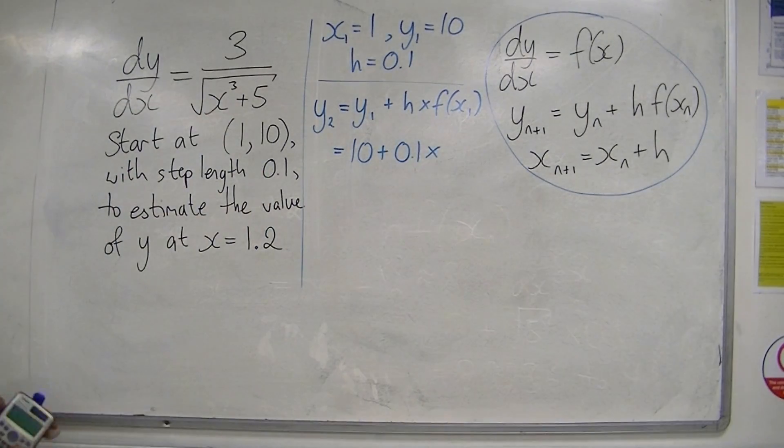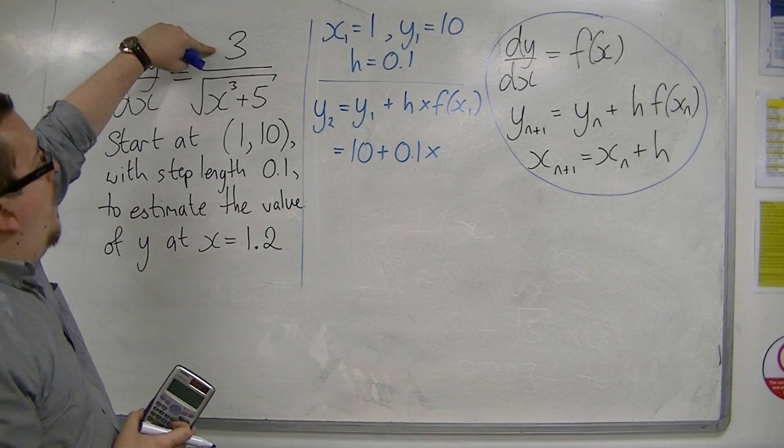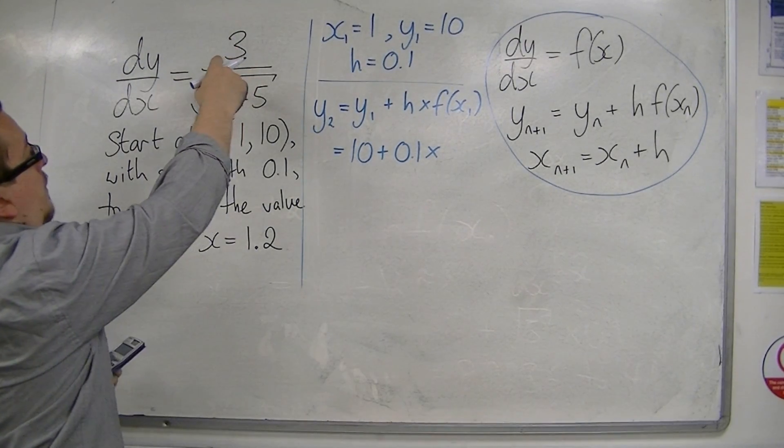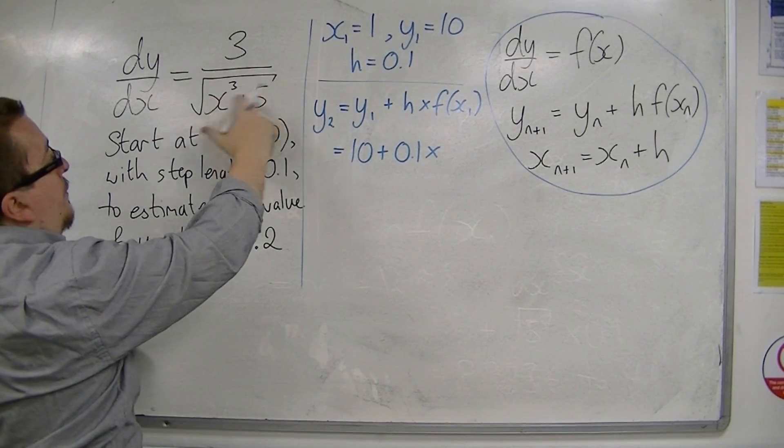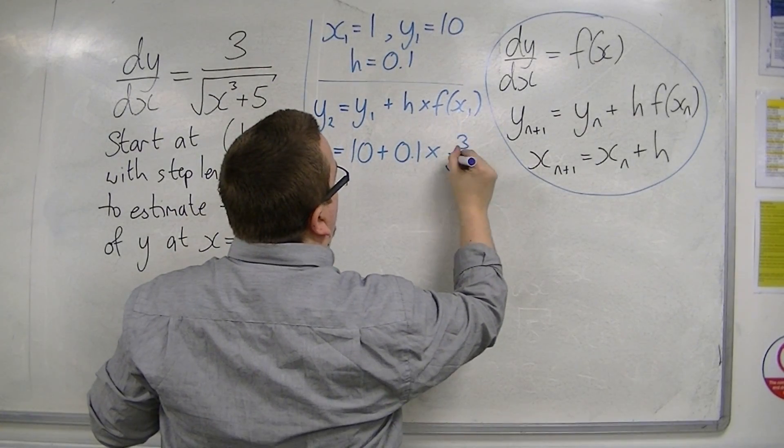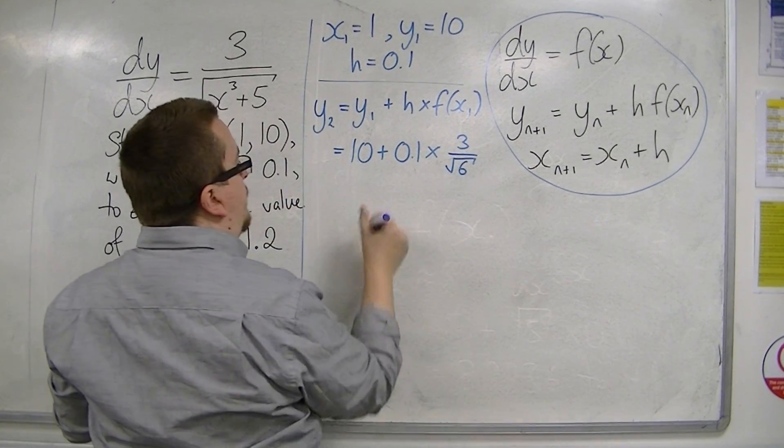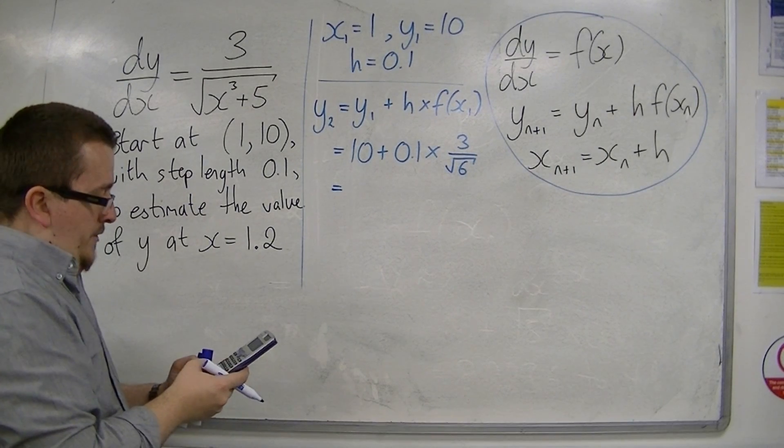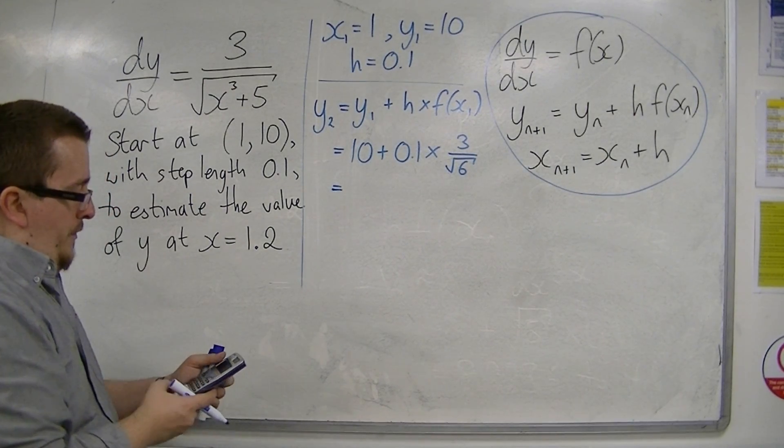f(x₁), so I'm going to have to substitute 1 into this. So we've got 3 over the square root of 6. So 3 over root 6. So 10 plus 0.1 times 3 divided by root 6.